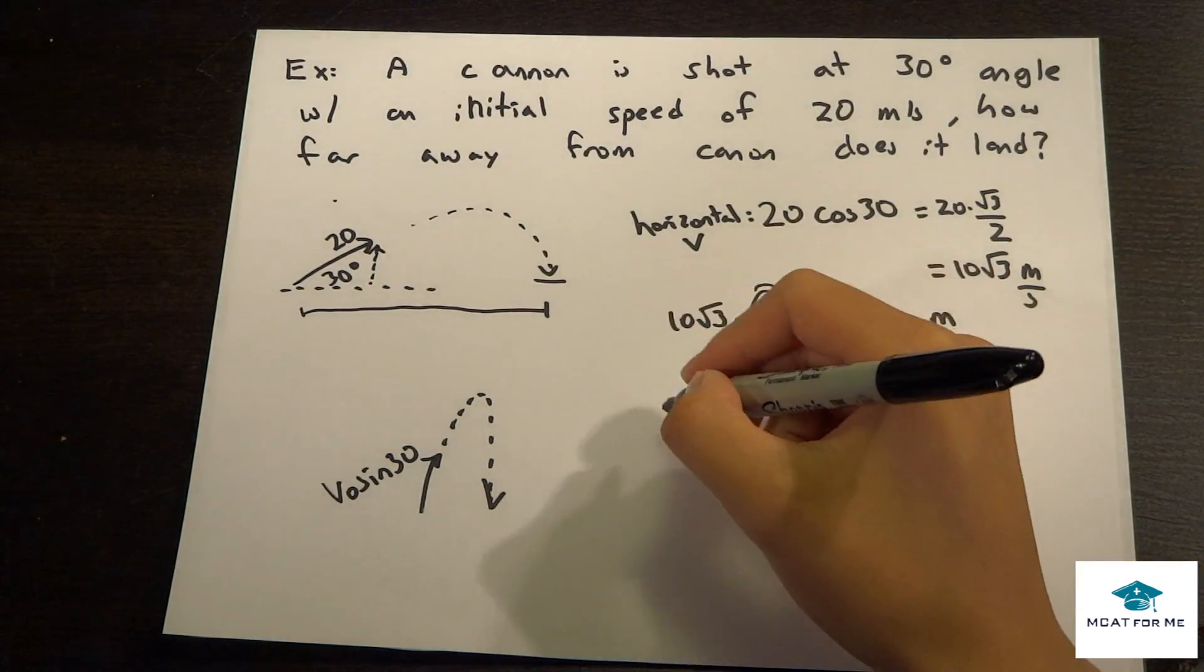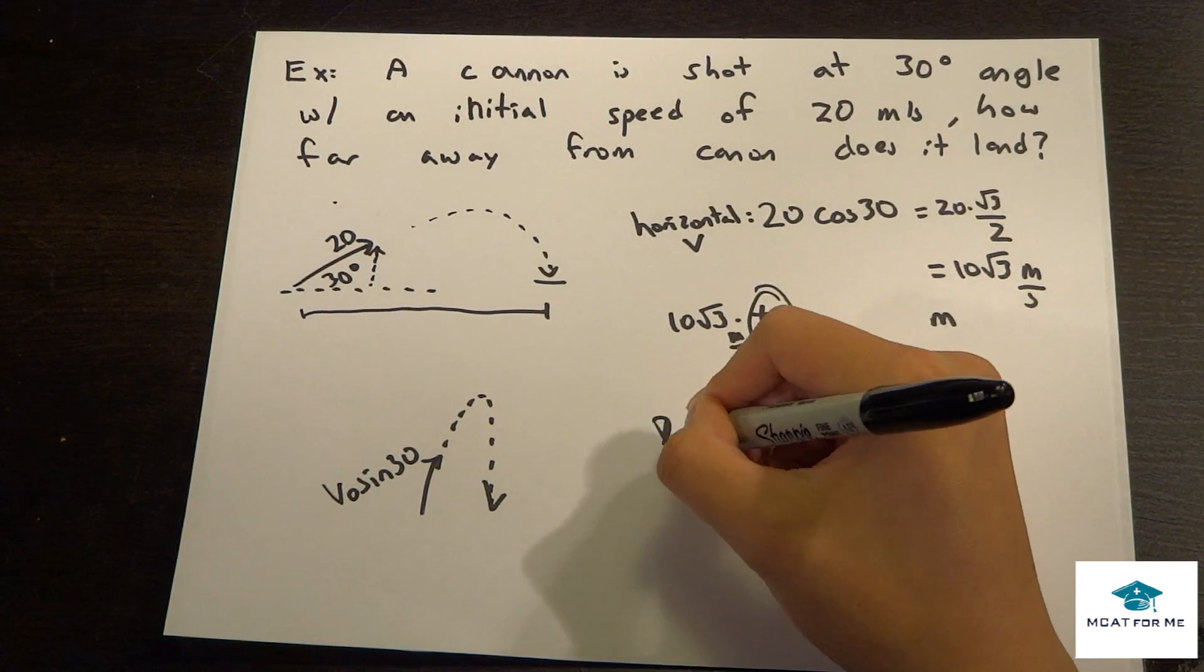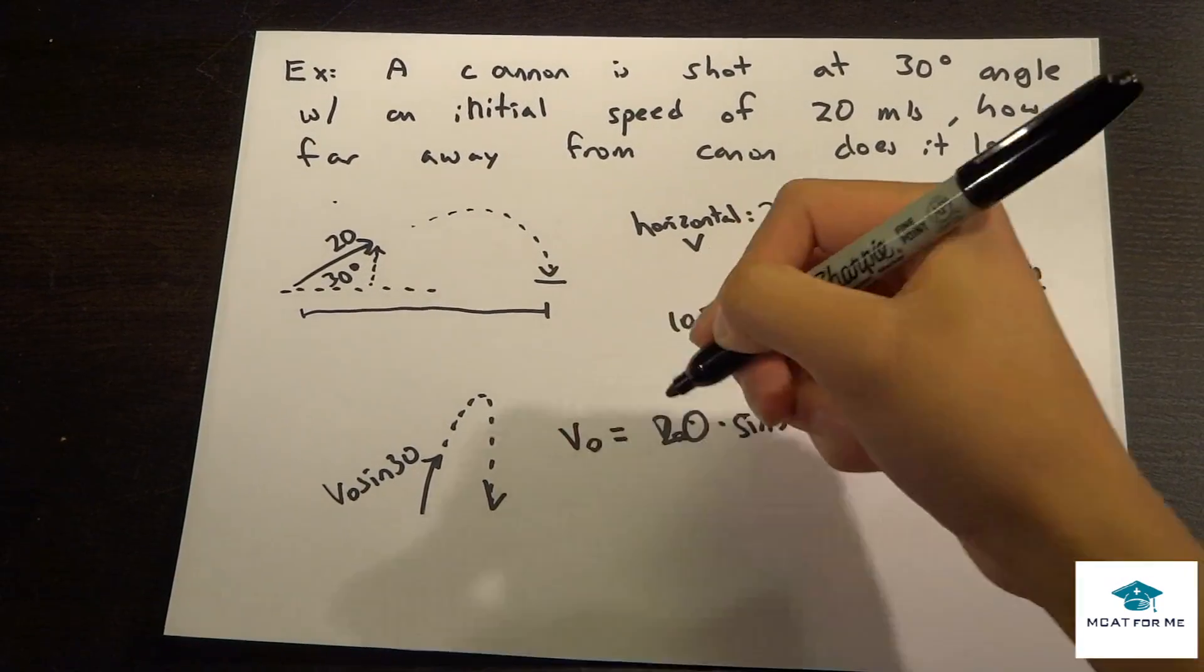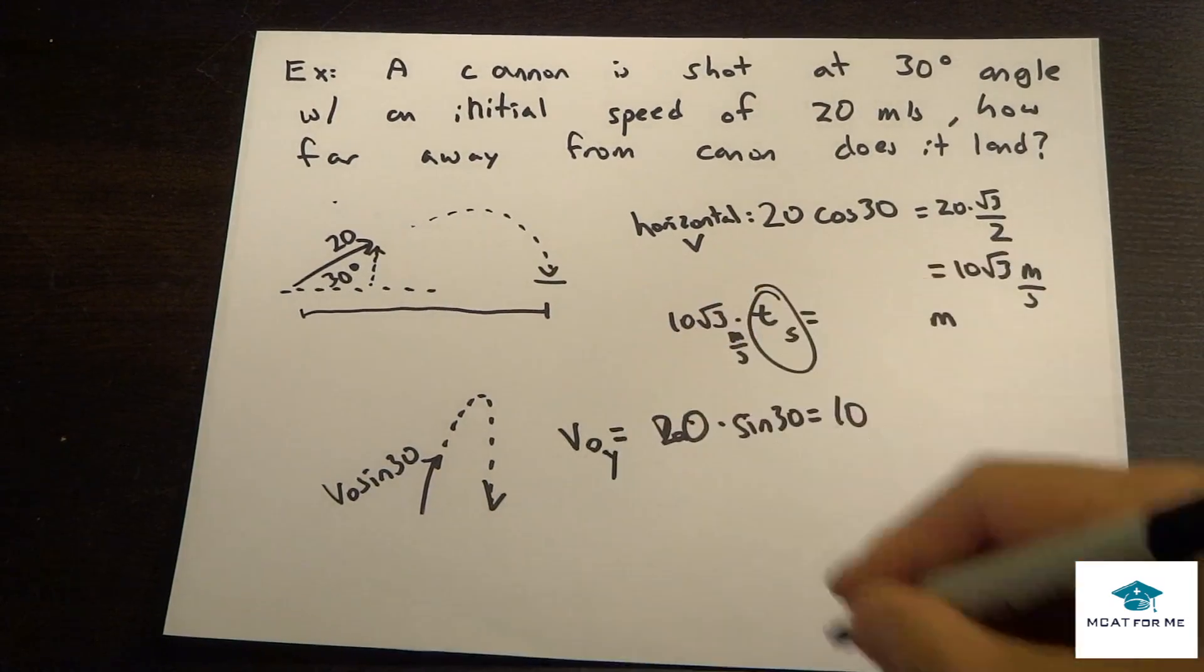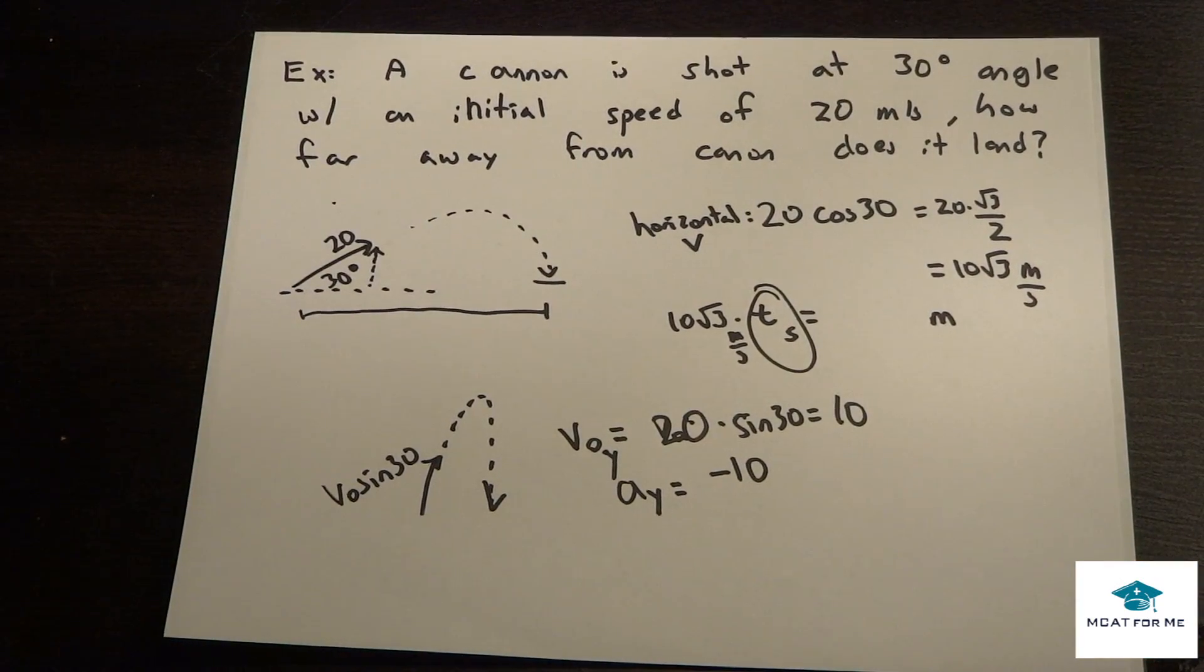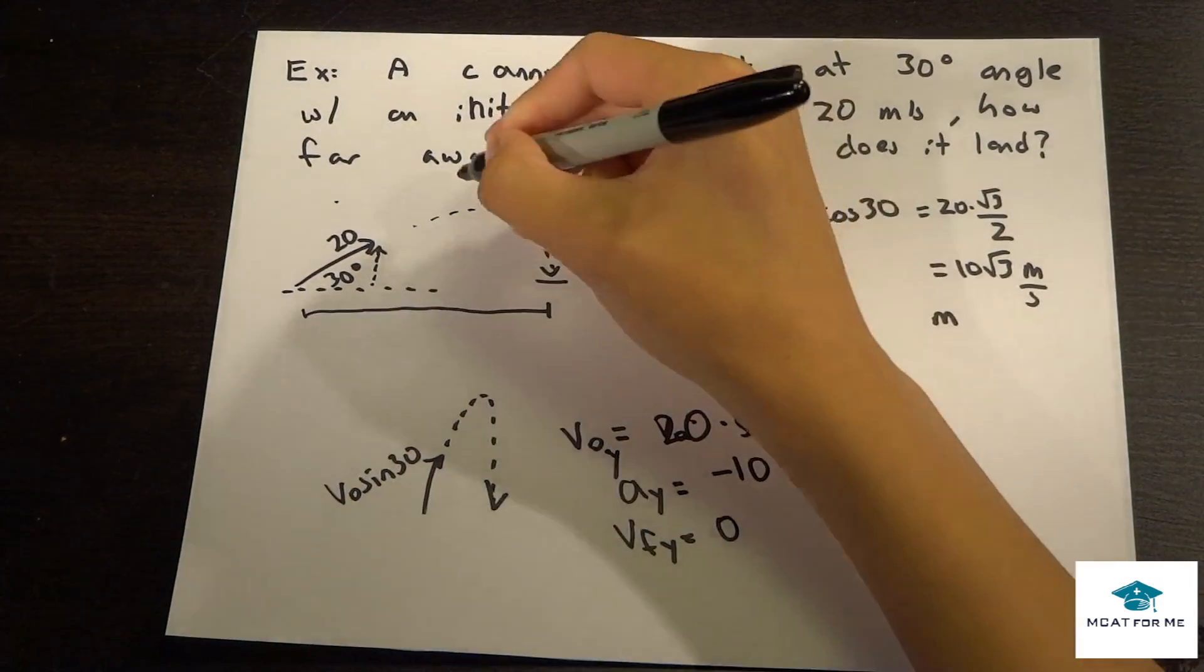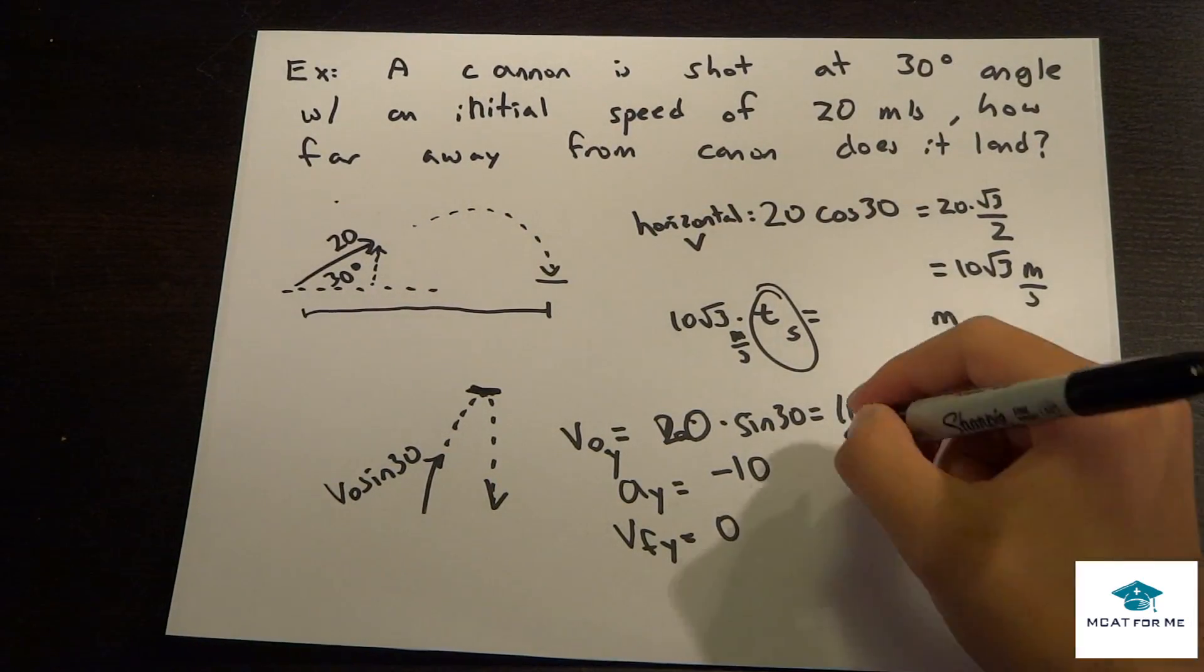If that's the case, we know that V0 sine 30 will be 20, so 20 times sine of 30, which is 1 half. So this is 10. V0 equals 10. This is in the vertical direction, so let's call this V0 y is 10. We also have a couple other pieces of information. We know A y equals negative 10. And we also know that V final y equals 0, because at this top point, V final is going to be 0. What do we want to know? We want to know time.